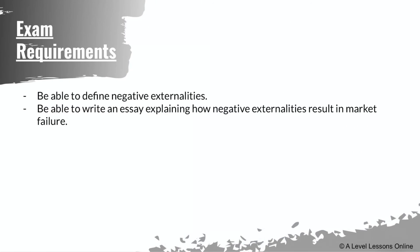For exam requirements: you need to be able to define negative externalities in one line and write an essay explaining how negative externalities lead to market failure. Market failure always arises when there is a deadweight loss to society and economic inefficiency. Negative externalities are notorious for causing this, which is why later we'll see that policies are needed to reach the socially optimal level and reduce the over-consumption of cigarettes.